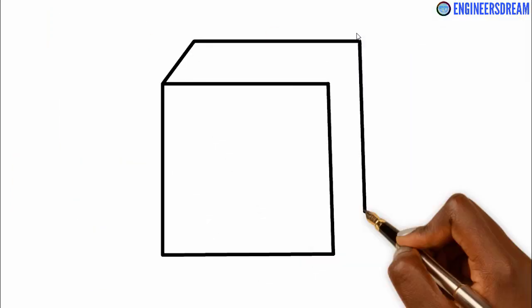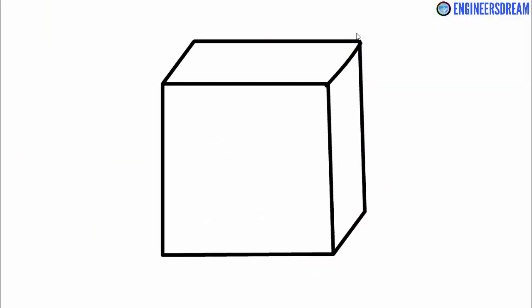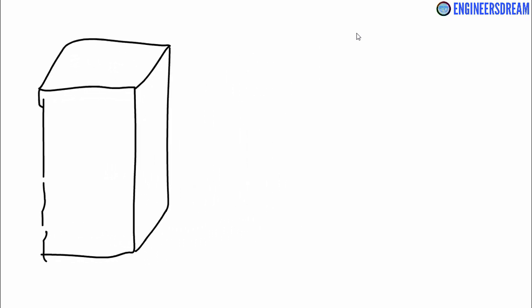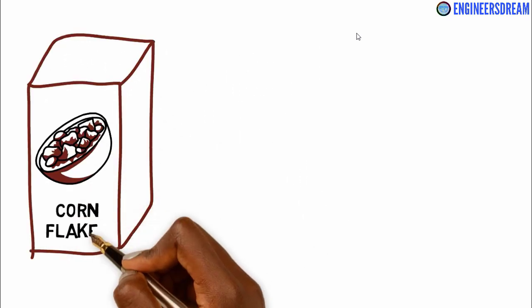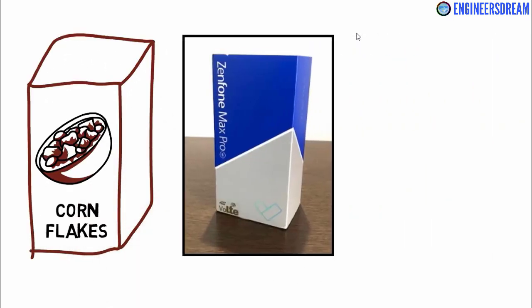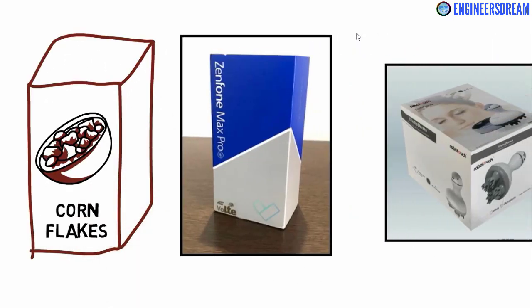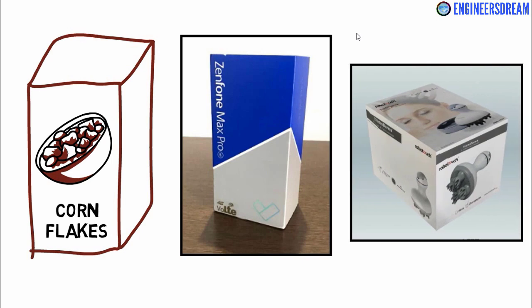For testing out this multi-target feature, you will need a cuboid box. You can use a cornflakes box, a mobile smartphone box, or a massager box like this one as I'll be using. So any box which has 6 sides, you can use it.